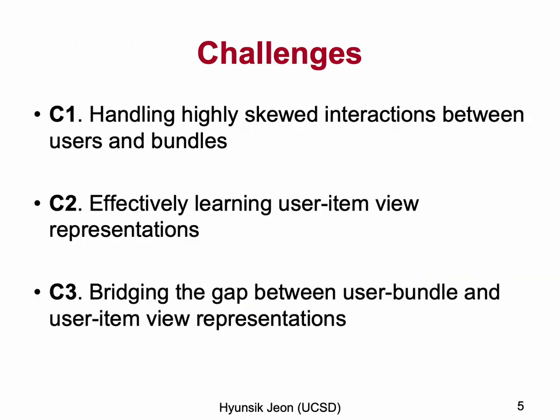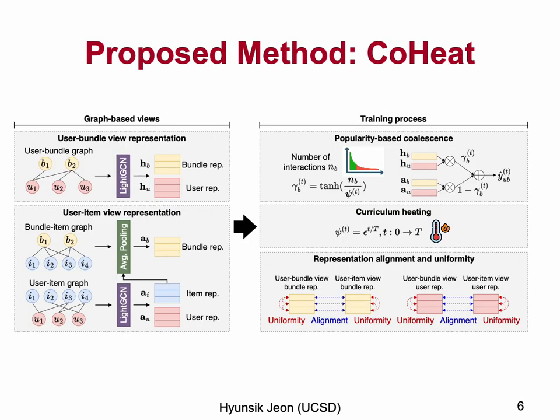To solve the cold-start bundle recommendation problem, we address three main challenges. First, we need to handle the highly skewed interactions between users and bundles, because users' interactions for bundles are extremely skewed. Second, we need to effectively learn user-item view representations, because they are important for cold bundles with only item affiliation information. Third, we need to bridge the gap between user-bundle and user-item view representations, because we use only user-item view representations for cold bundles.